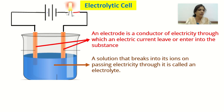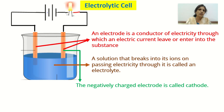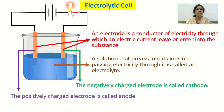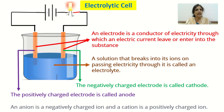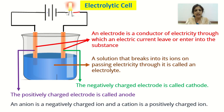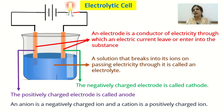The electrode connected to the negative terminal of the battery is called the cathode, and the electrode connected to the positive terminal is called the anode. When electric current passes through the solution, it dissociates into positively and negatively charged ions. A negatively charged ion is called an anion, and a positively charged ion is called a cation. So an electrolytic cell consists of electrodes, an electrolyte, a cell or battery, and a bulb.